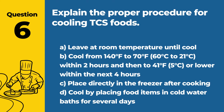Question 6. Explain the proper procedure for cooling TCS foods. Answer: B. Cool from 140°F to 70°F (60°C to 21°C) within 2 hours, and then to 41°F (5°C) or lower within the next 4 hours. This two-stage cooling process ensures rapid and safe reduction of food temperature to prevent bacterial growth.